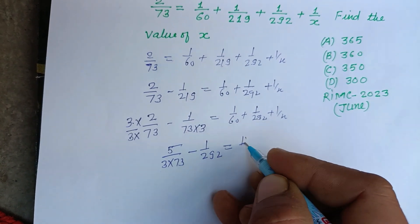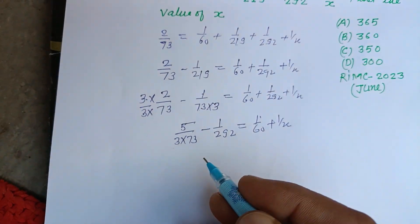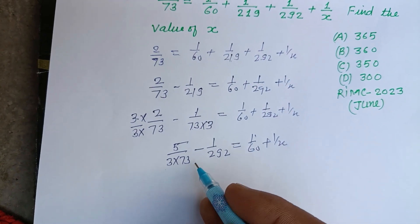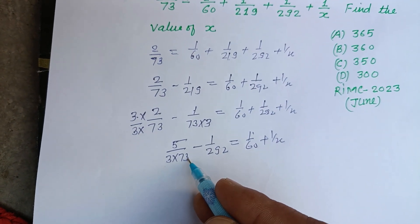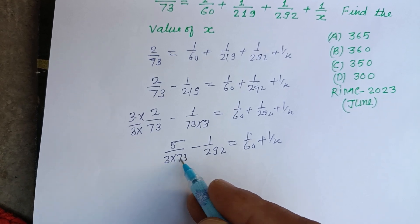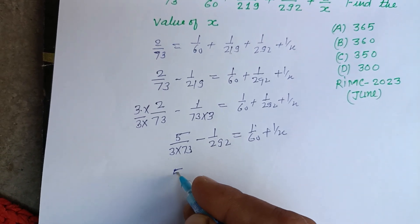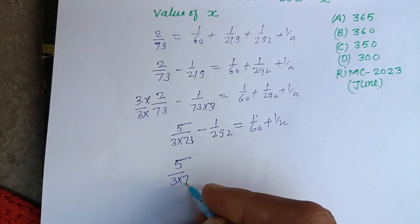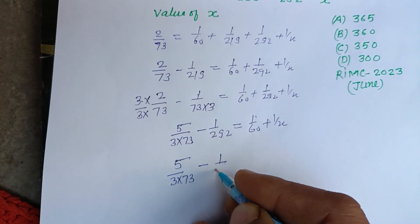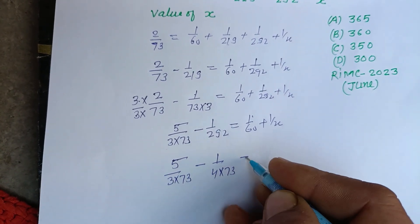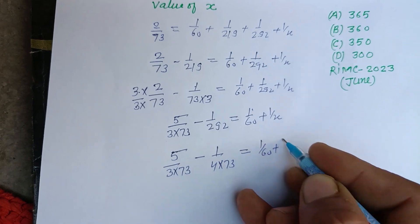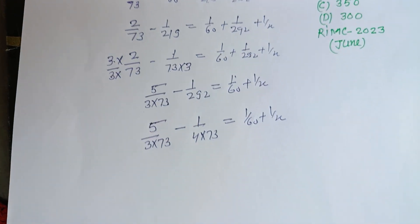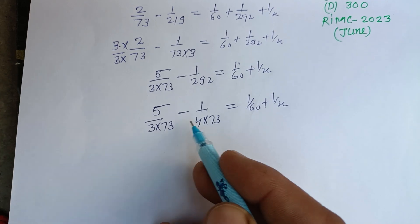When we check 292, it's 4×73. So 5/(3×73) - 1/(4×73) = 1/60 + 1/x. Now here is 4, here is 3.